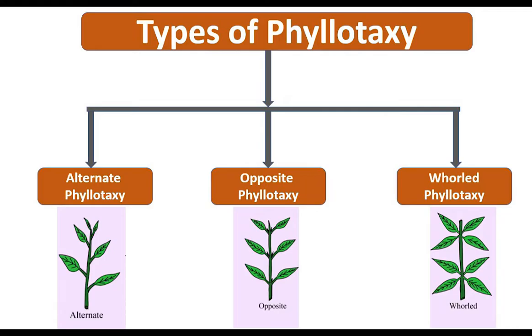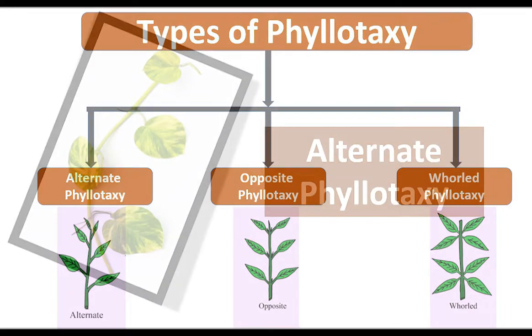Those ways are: Alternate Phyllotaxy, Opposite Phyllotaxy, and Whorled Phyllotaxy. The name itself indicates their arrangement. So let's understand them now.